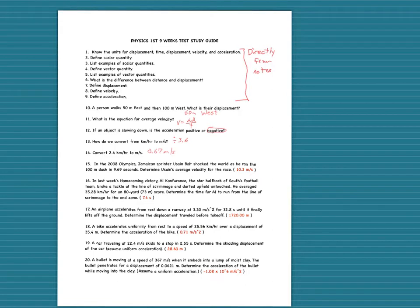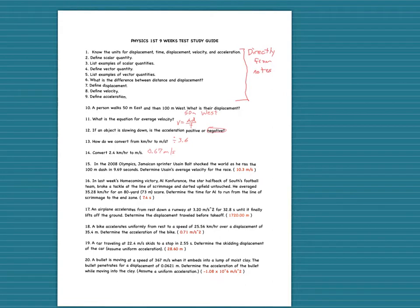Number 12: if an object is slowing down, the acceleration is negative — we have to show it that way. Number 13: before working a problem, convert kilometers per hour to meters per second by dividing by 3.6. Number 14: convert 2.4 kilometers per hour to meters per second — divide by 3.6, which gives you 0.67 meters per second.